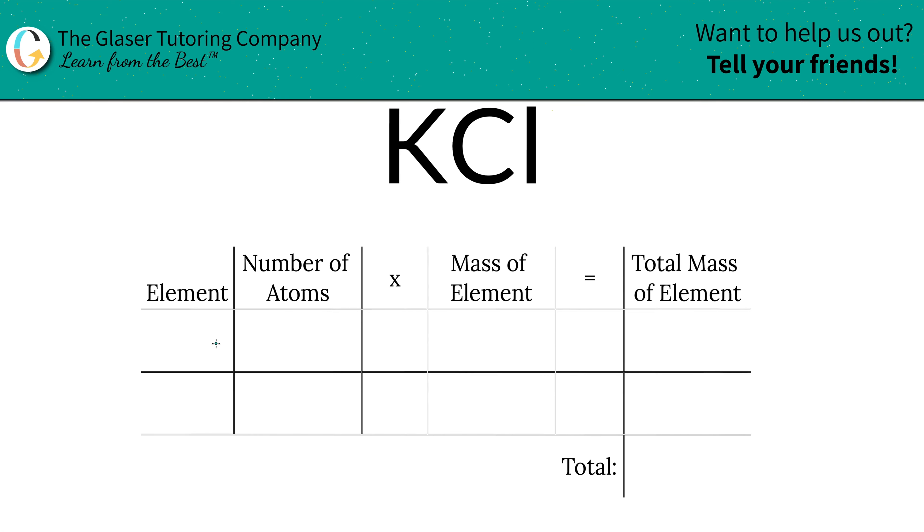So the first thing I'm going to do is write the elements down that I see in the compound. So we see potassium K and we see chlorine Cl. Next is to identify the number of atoms, and that's where the subscripts come into play. Now, if you don't see a subscript at the bottom of that element, there is an assumed one down there.